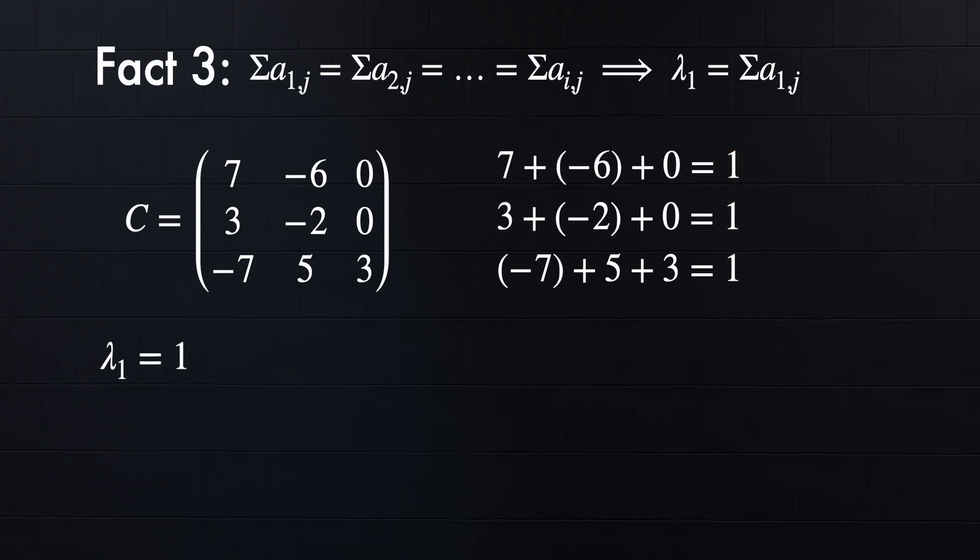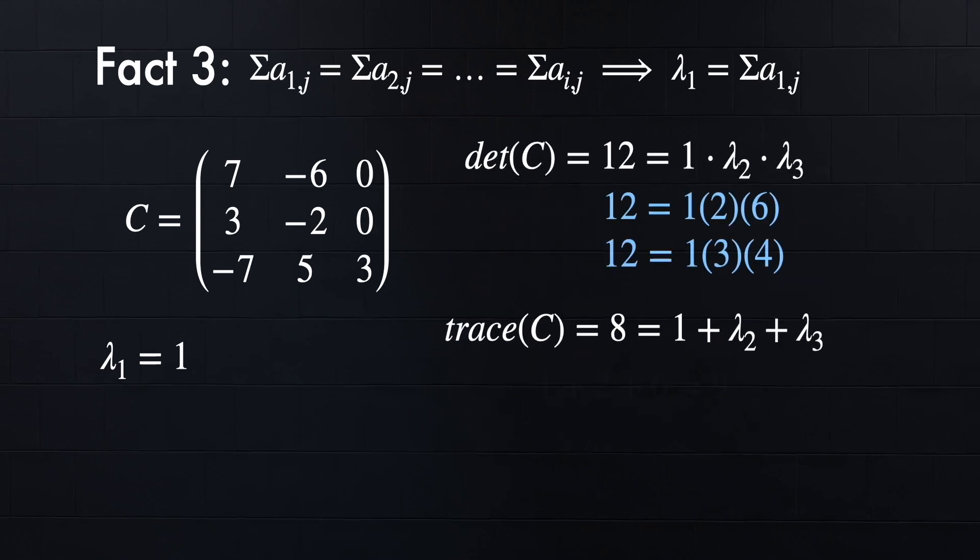And just for fun, we can find the other two eigenvalues using the facts that we've already gone over. So the determinant equals 12, which is 1 times lambda_2 and lambda_3, and then the trace equals 8, which is 1 plus lambda_2 and lambda_3. Then we can list out all the possible values for lambda_2 and lambda_3 to multiply to 12, which are 1 times 2 times 6, or 1 times 3 times 4. Then we can test out those specific values and see if the sum of them equals 8. And as we can see, 1 plus 3 plus 4 does equal 8, so these two must be the other eigenvalues.